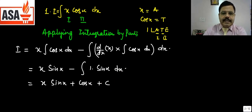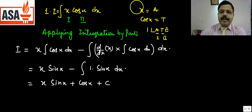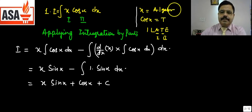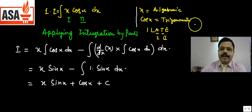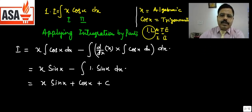So you understand how to do it. For this question you use integration by parts, taking care of first and second. This is algebraic and this is trigonometric, so you take algebraic as first and then trigonometric as second.